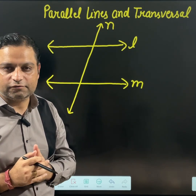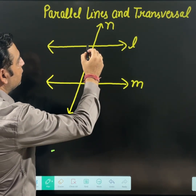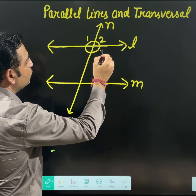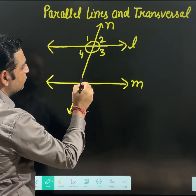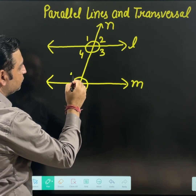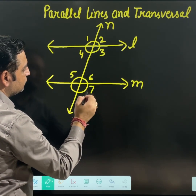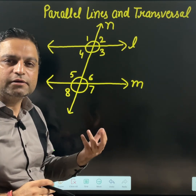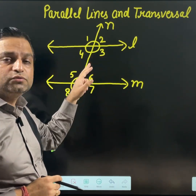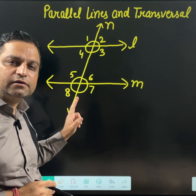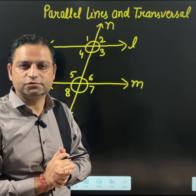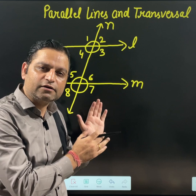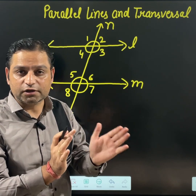Now, how many angles are formed here? I am giving angle names: angle 1, 2, 3, 4 at the top intersection, and same at the bottom, 5, 6, 7, and 8. Total 8 angles are formed, and we are going to learn different relations between these angles which are going to be very helpful.